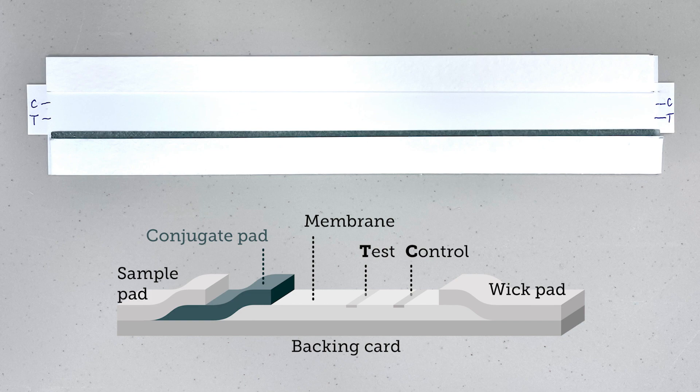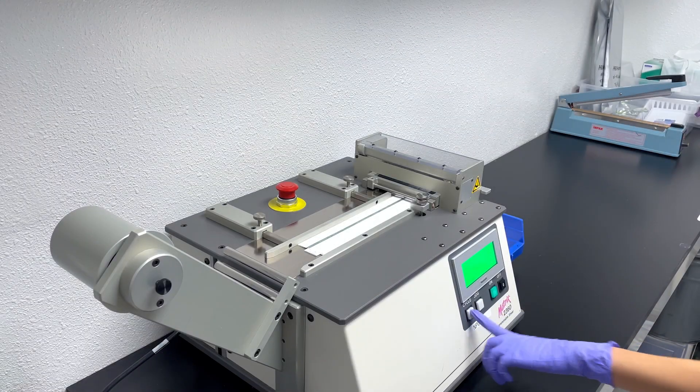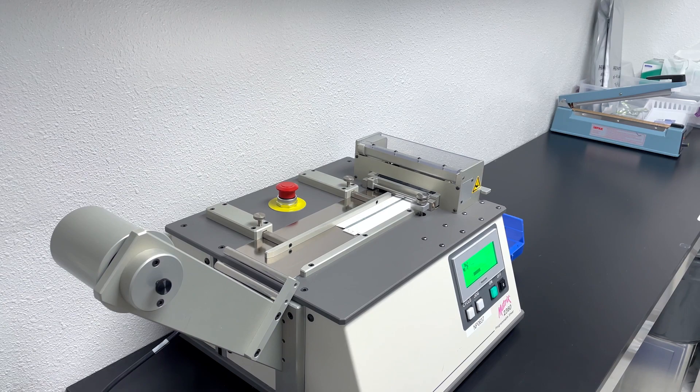Typically, a lateral flow strip is around 4-5 millimeters in width, but you can design your strip at any width per your assay specification. Use a guillotine cutter to set the desired width for your strip and begin cutting.